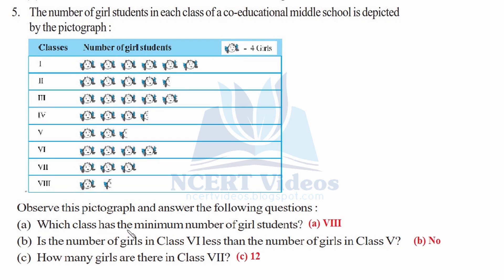Part A: which class has the minimum number of girls? Clearly visible from the pictograph, the last class — class 8 — has the minimum. It shows one and a half pictures: 1 full picture is 4 girls, and the half picture is 2 girls, giving 4 plus 2 = 6. So class 8 has the minimum number of girls.